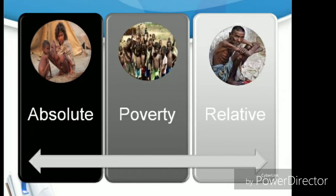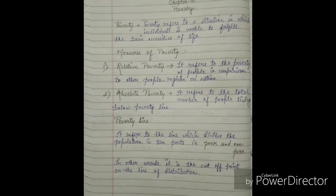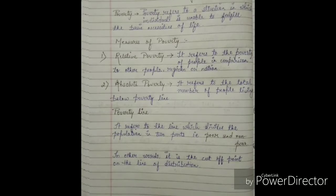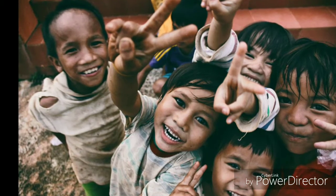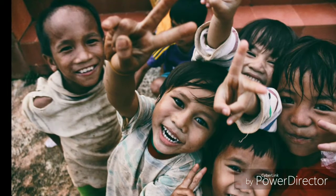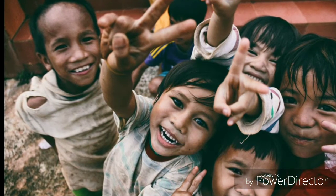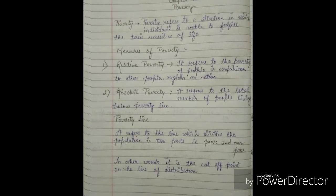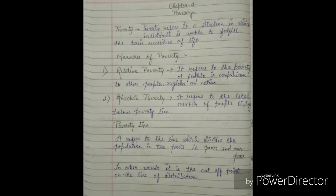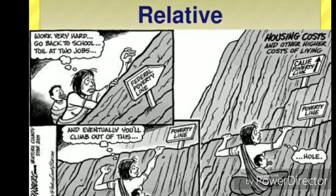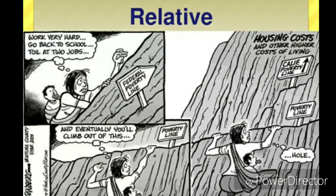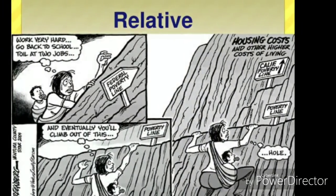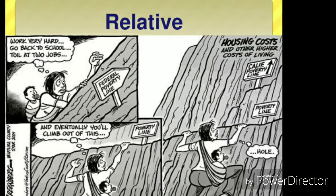Relative poverty refers to the poverty of people in comparison to other people, regions, or nations. That means the people are not actually poor — they are found to be poor when they compare themselves with other people, or when a country compares itself with another country, or when a region is compared with another region. They can afford to fulfill their basic requirements; they are not actually poor, but relatively poor when being compared.